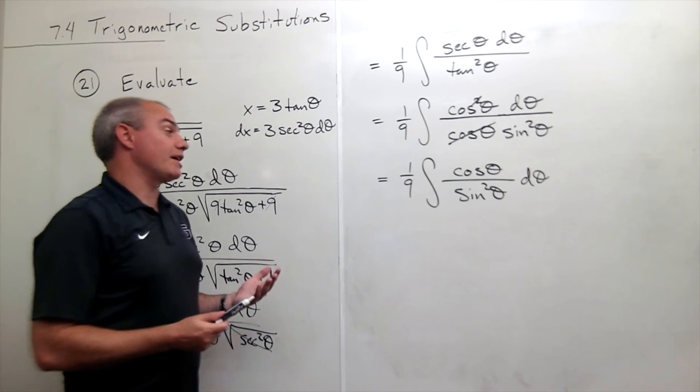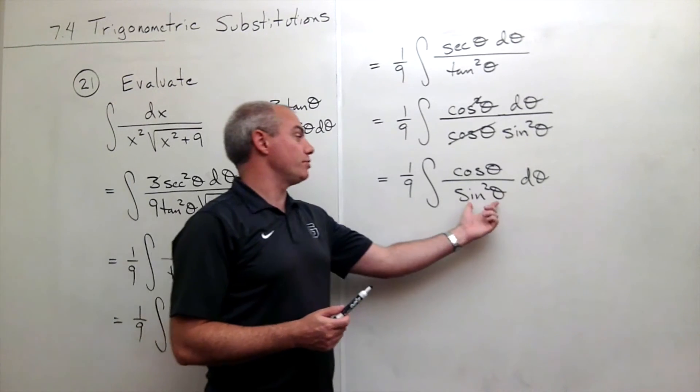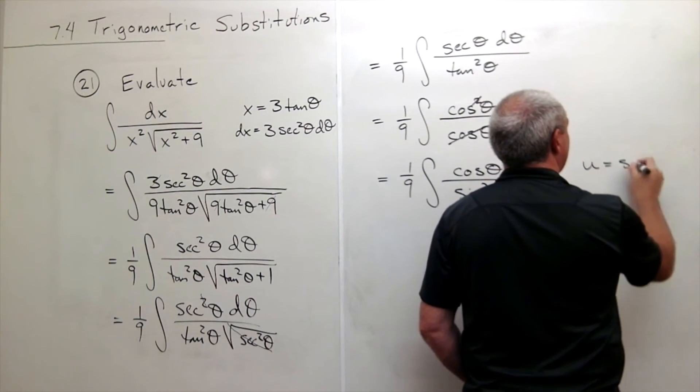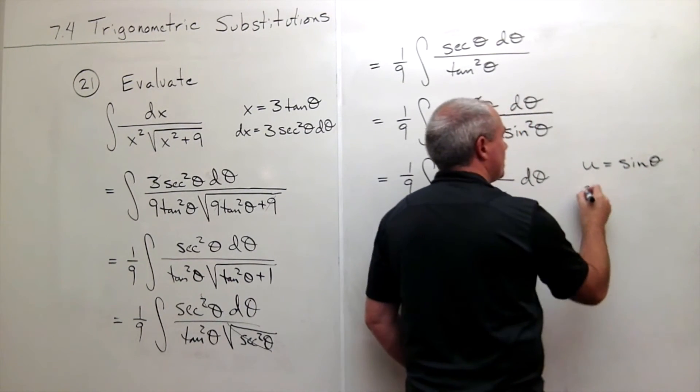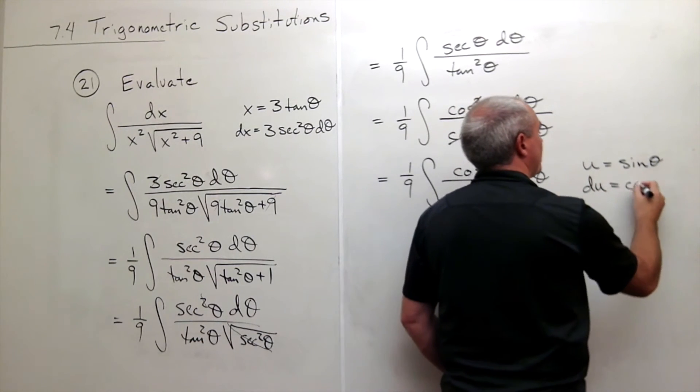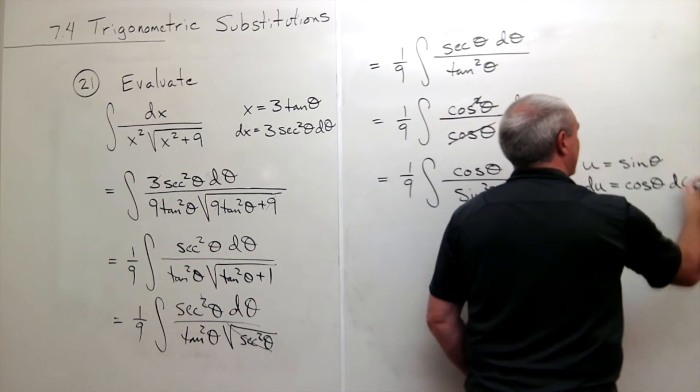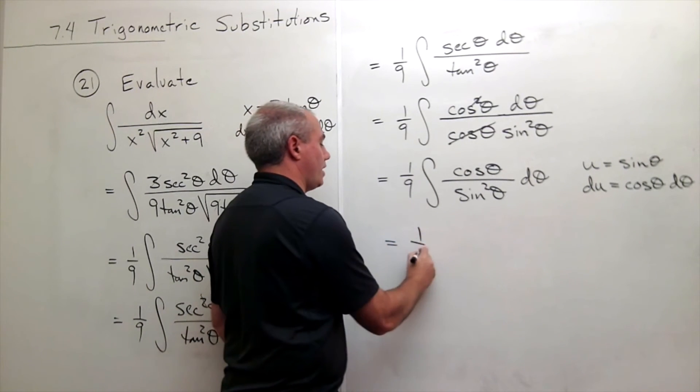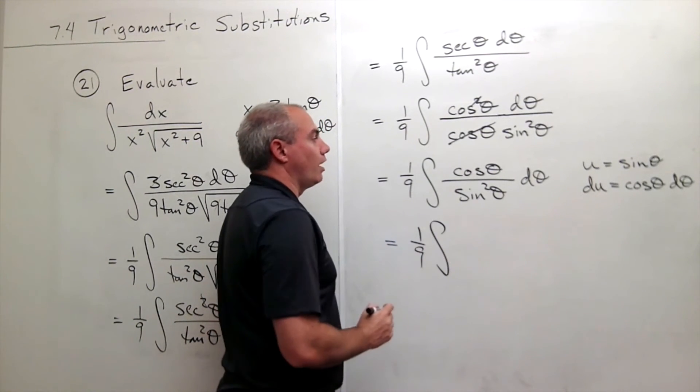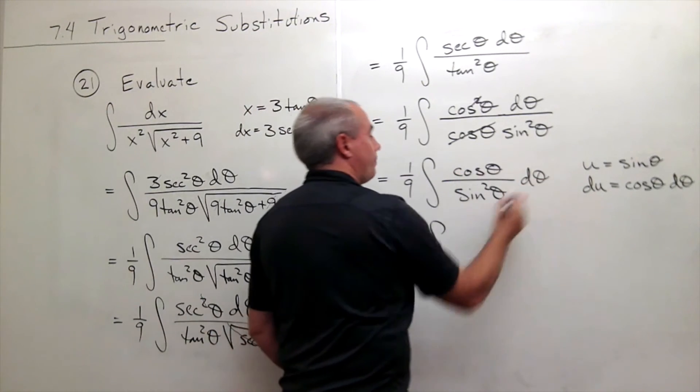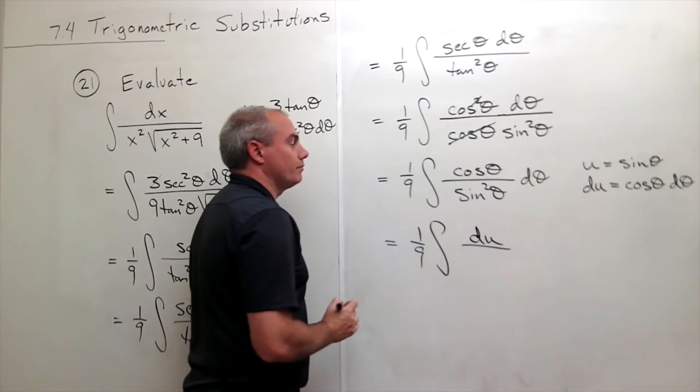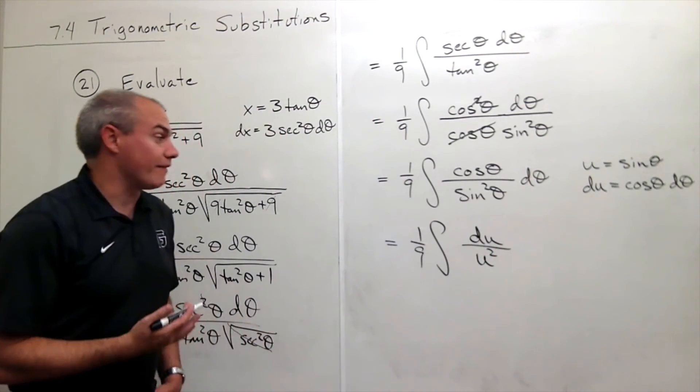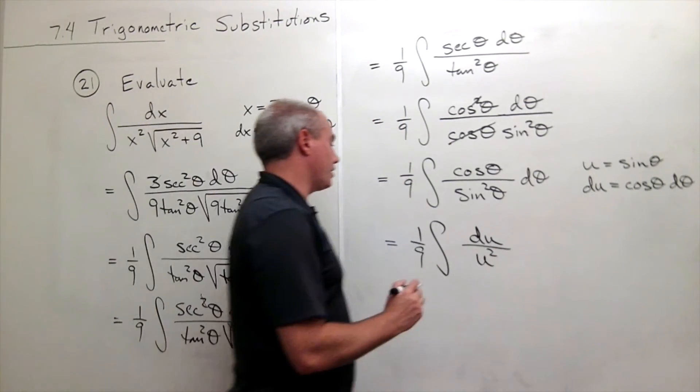Now I can make a simple u substitution for sine of theta. So I'm just going to let u be sine theta. So du would be cosine theta d theta. So I can make this substitution and I get 1 9th, the integral of, well the whole top just becomes du. And the bottom is just u squared. So now we have a very simple integral.